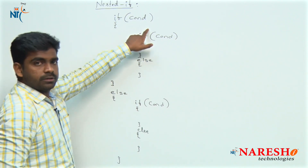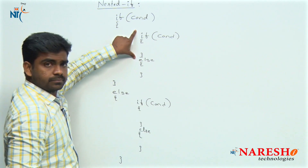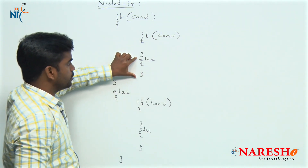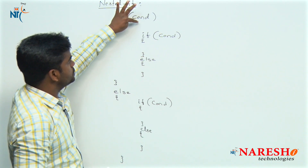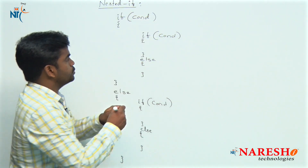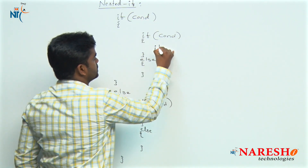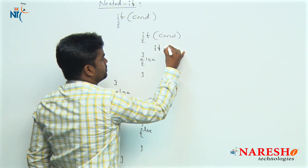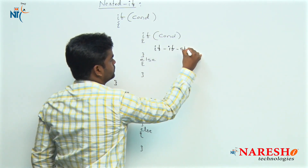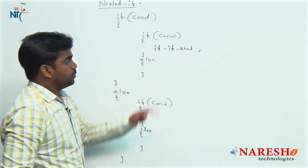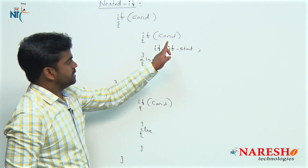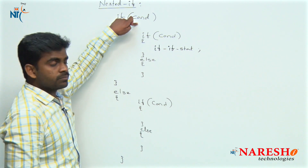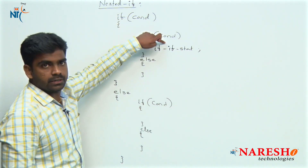When outer condition is true, the control moves inside and checks the inner condition. The outer else block is completely terminated. Control enters into the inner if block and checks its condition again. If both outer condition and inner condition are true, the outer if block statements and inner if block statements execute.